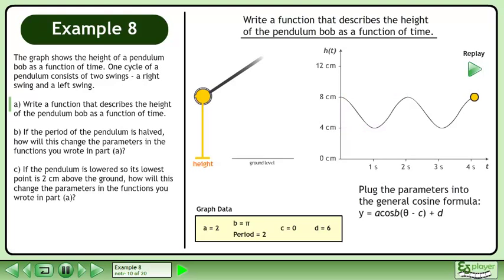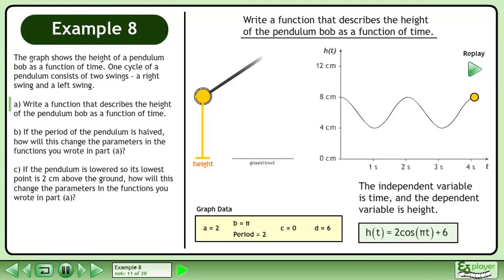Plug the parameters into the general cosine formula y equals a cos(b theta minus c) plus d. The independent variable is time and the dependent variable is height. The function is h(t) = 2cos(πt) + 6.